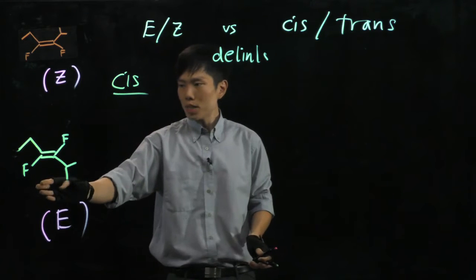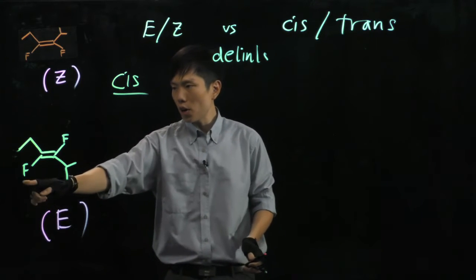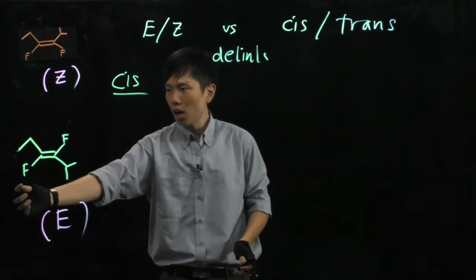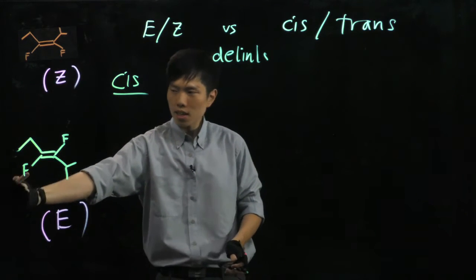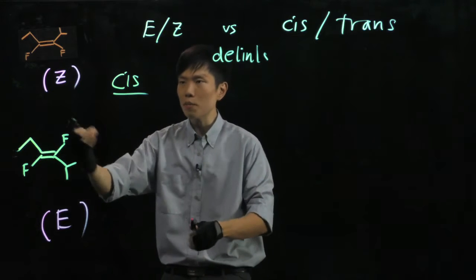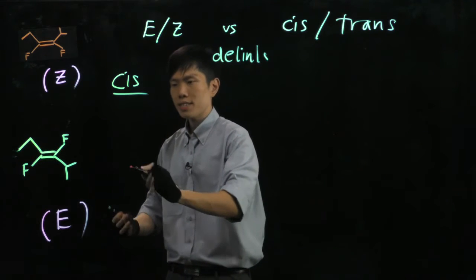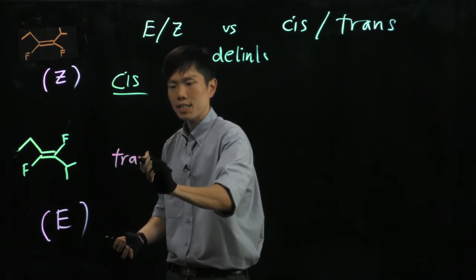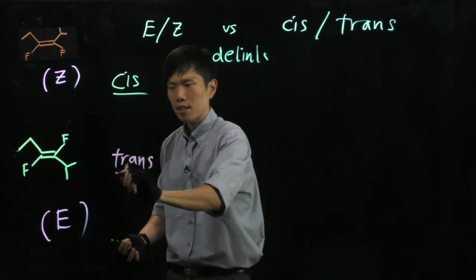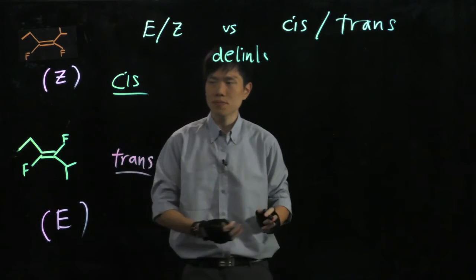For the one below, the fluorines are on the opposite side, cutting across the double bond. So that will be a trans isomer.